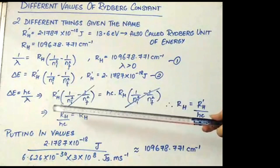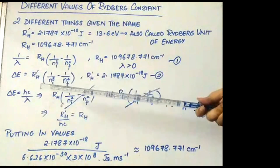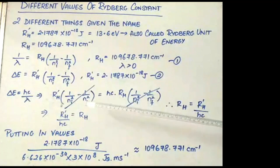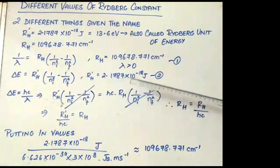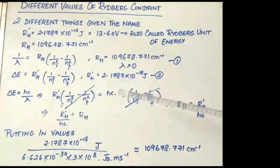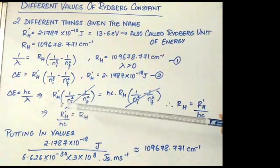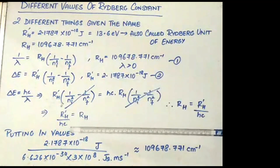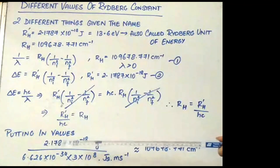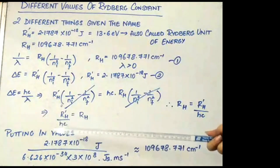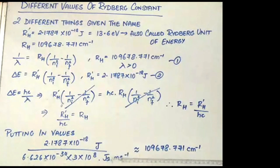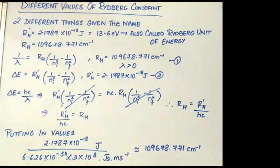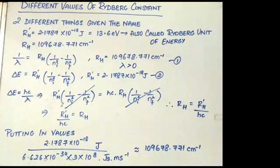So delta E equals hc/λ. Substituting equation 1 and equation 2, we get: R_H-dash × (1/N1² minus 1/N_f²) equals hc × R_H × (1/N1² minus 1/N_f²). The common terms cancel, giving R_H-dash divided by hc equals R_H. Putting in the values: R_H-dash (2.1787 × 10⁻¹⁸ joules) divided by Planck's constant (6.626 × 10⁻³⁴ J·s) times the speed of light (3 × 10⁸ m/s), converting meters to centimeters, gives approximately 109678.771 cm⁻¹. So the Rydberg constant R_H equals the Rydberg unit of energy divided by hc.